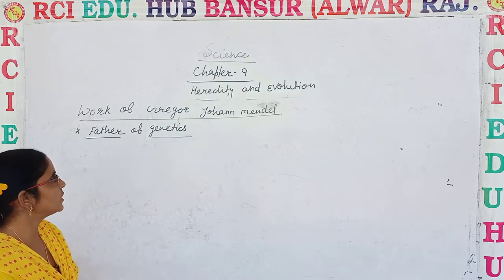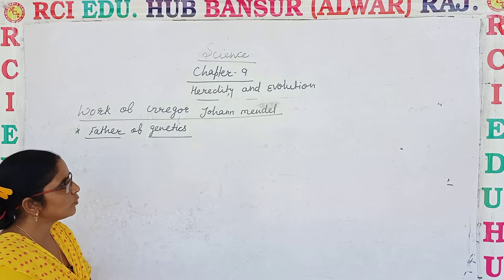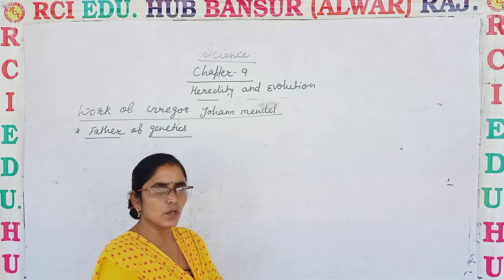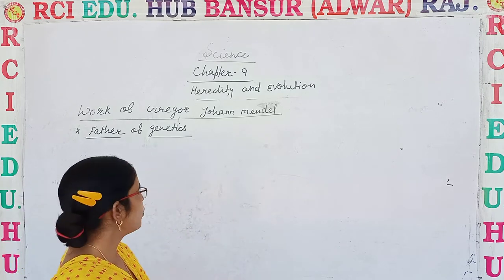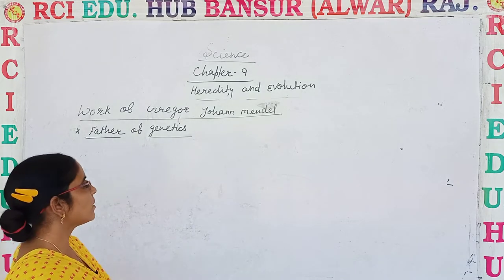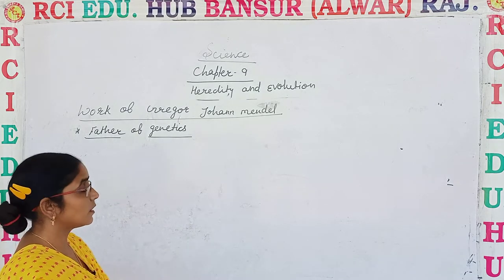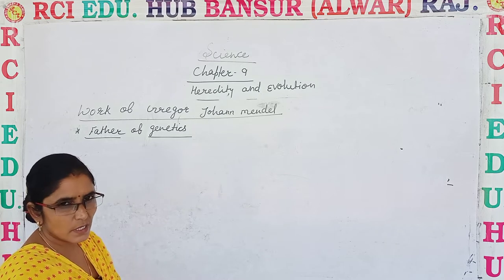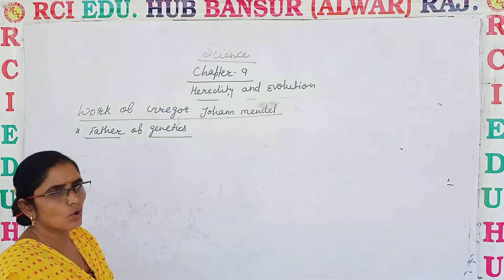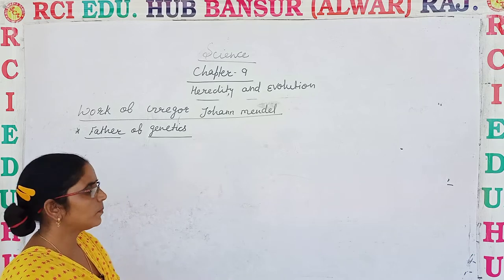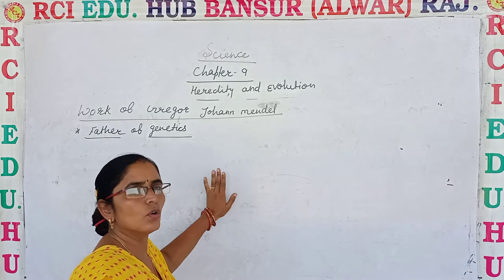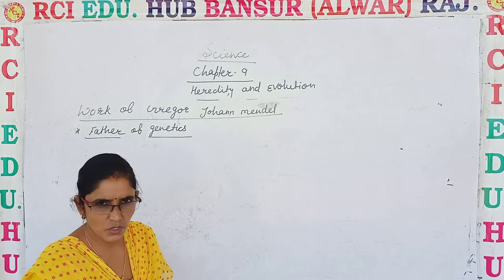Now let's discuss the work of Gregor John Mendel. He was a very famous biologist. The work of Gregor John Mendel was very special, so he was considered as the father of genetics. This has been developed by modern genetics. He worked as a monk, as a priest, in a church.